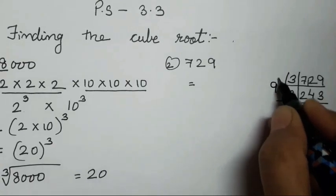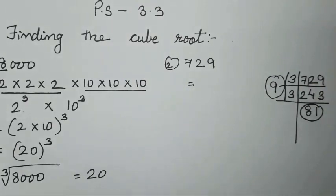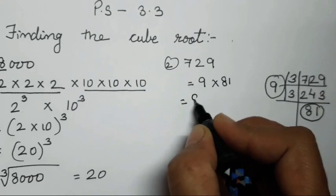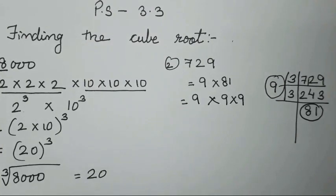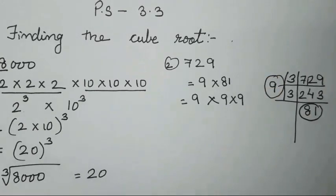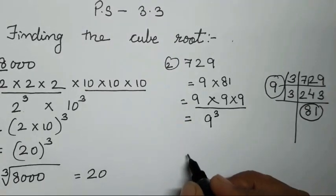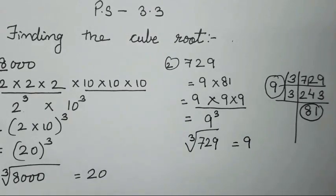We use 9 into 81. If we multiply 9 into 81 we get 729. Now 9 we keep as it is, and 81 comes from 9 nines are 81. So we have got 9 three times. Write 9 to the power of 3, and therefore the cube root of 729 is 9. Isn't it easy? You have to use a few basic multiplication facts here.